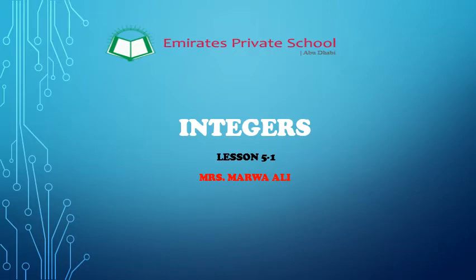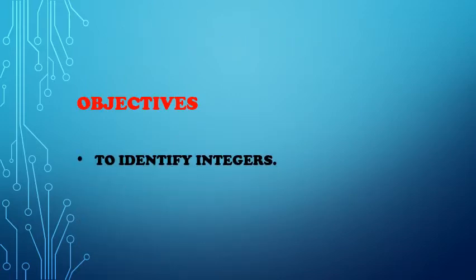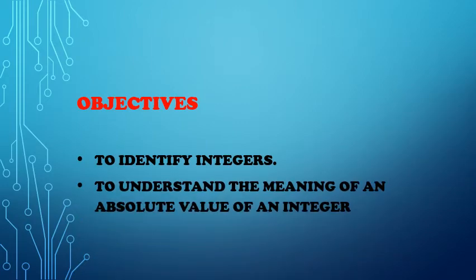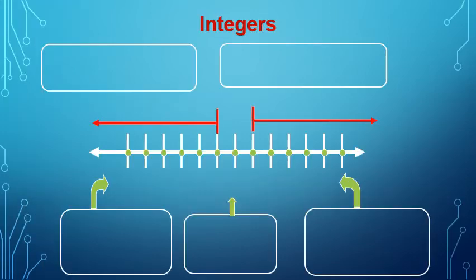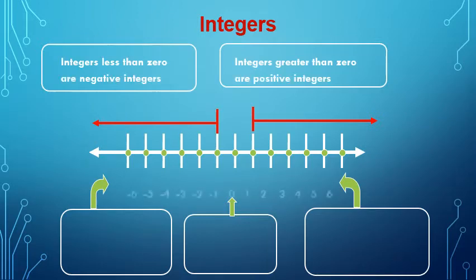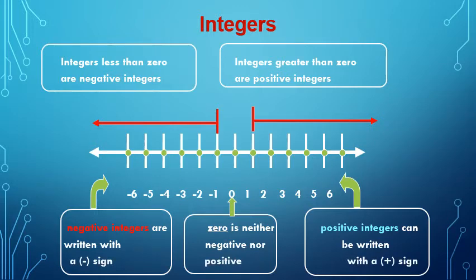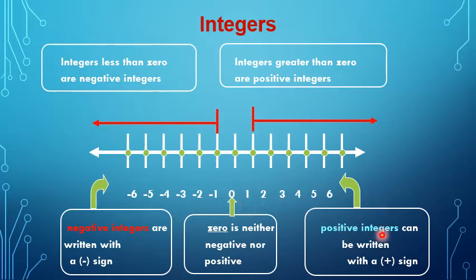Hello, Grade 6. Our topic today is integers. The objectives are to identify integers and to understand the meaning of absolute value of an integer. Integers are whole numbers. Whole numbers contain positive numbers, negative numbers, and zero. We call positive numbers positive integers and negative numbers negative integers. Zero is a special number — it separates the positive numbers from the negative numbers.